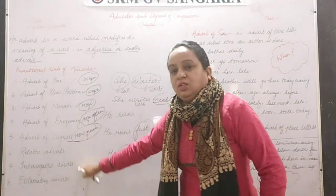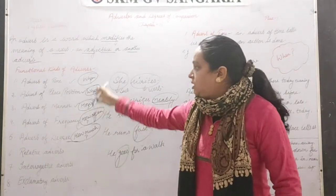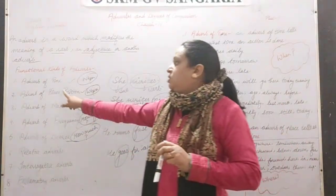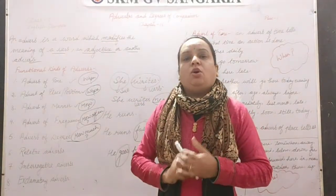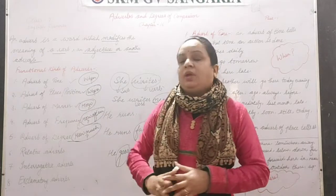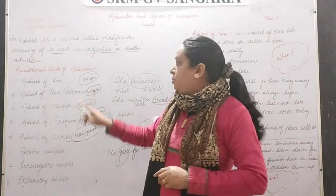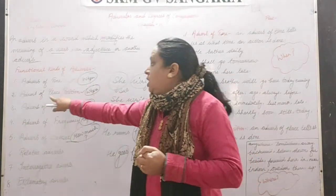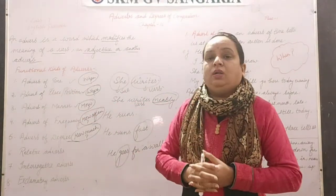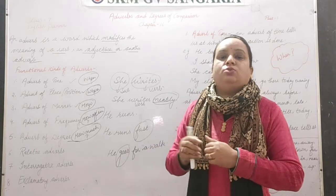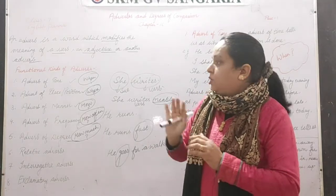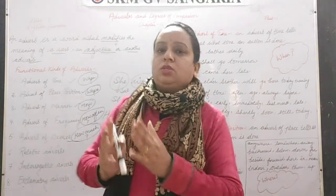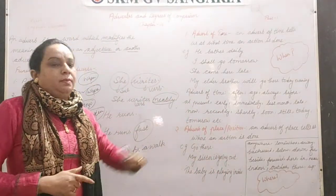There are also relative adverbs, interrogative adverbs, and exclamatory adverbs, which I will discuss in the next part of the video. Today we will cover only two kinds: adverb of time and adverb of place or position. To locate adverb of time, frame the question with 'when.' For adverb of place, frame the question with 'where' — where the action has taken place.